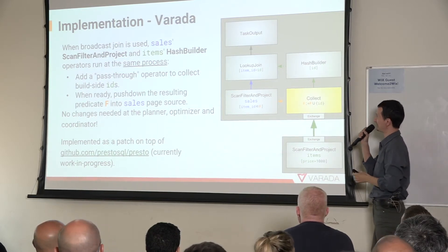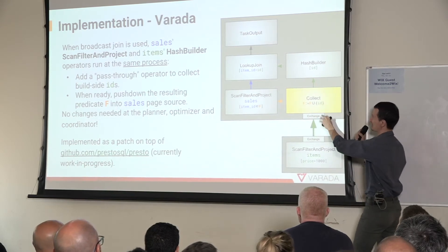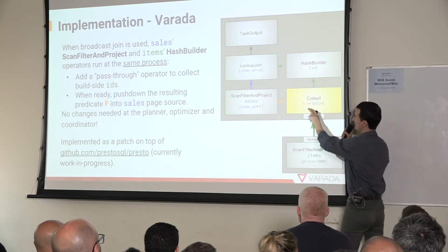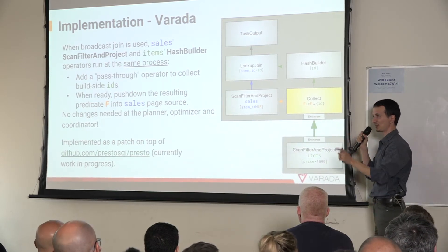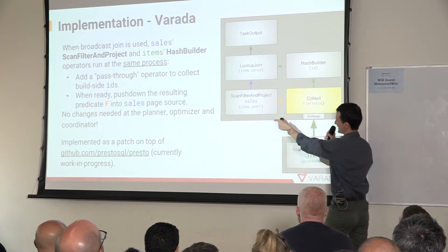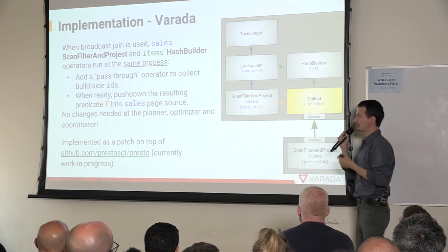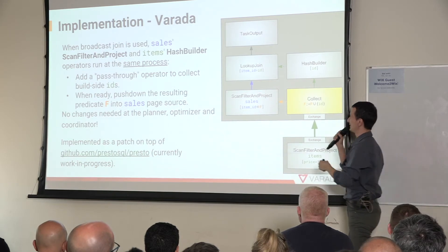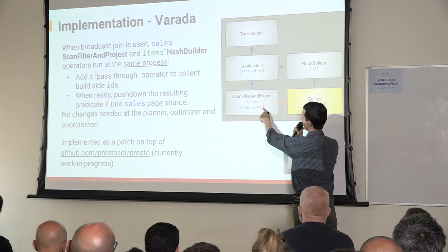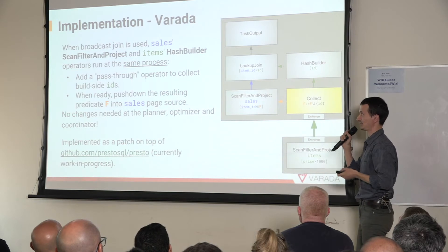We added a new operator — a collector — that collects the IDs coming from the item rows. It constructs a dynamic filter as a tuple domain and applies it dynamically into the scan operator running over the sales table. Because we at Varada implement this scan very efficiently, the dynamic filter improves scan performance significantly. This solution requires no changes to the planner, no changes in the optimizer — the coordinator doesn't even know it's happening.